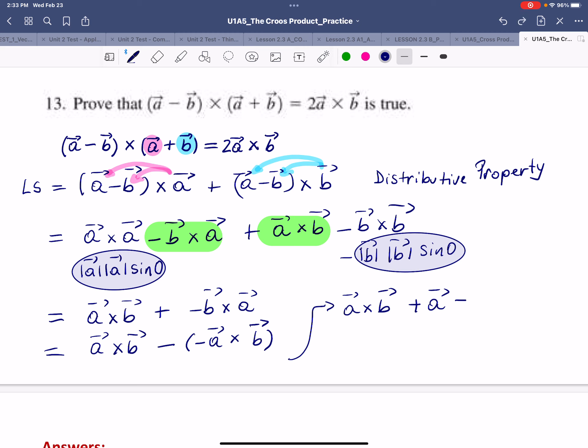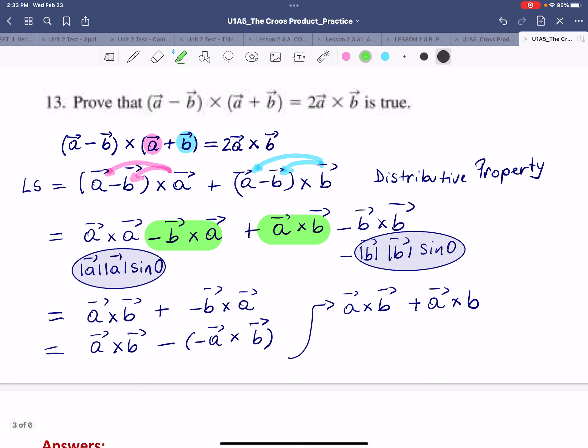So A cross B, and then we'll be plus A cross B. Okay, so the two minuses in here will make a plus. Now, as you can see in here, we have the cross product of the same pair of vectors. So we have two of them. So 2A cross B.